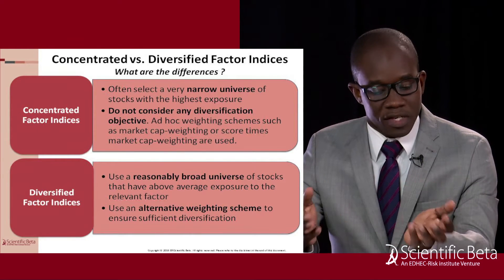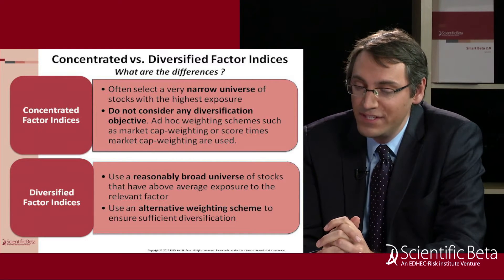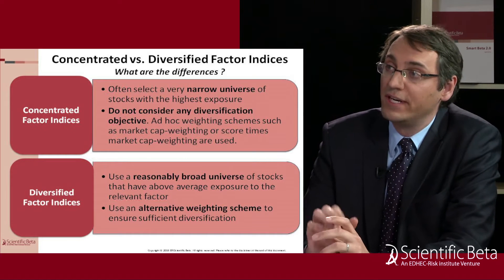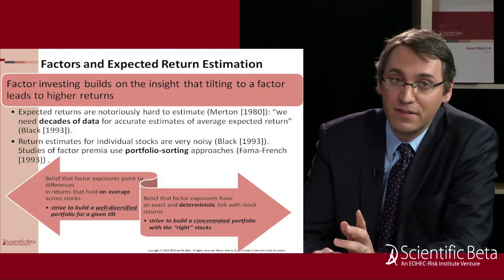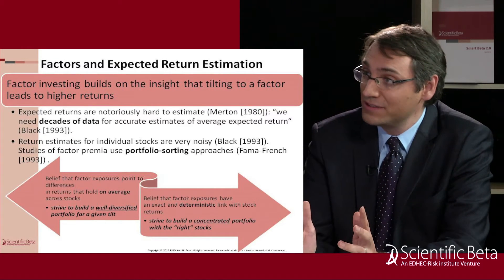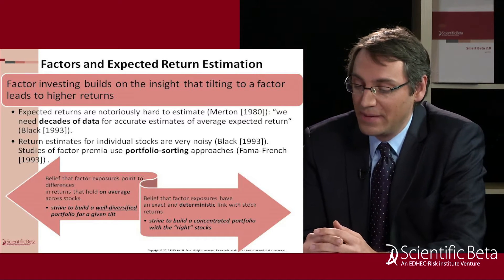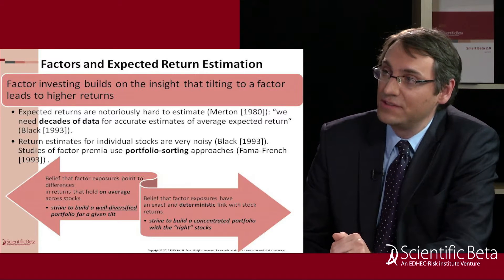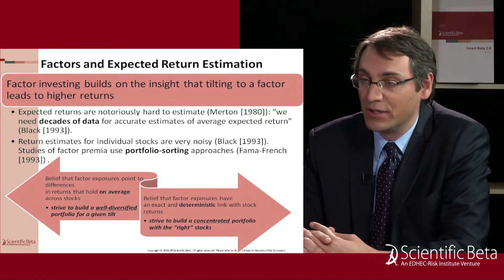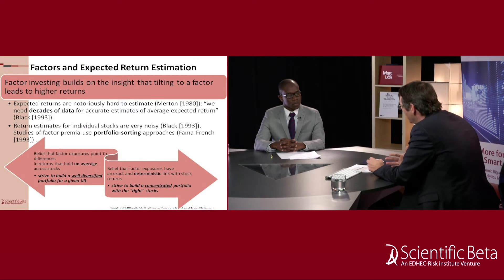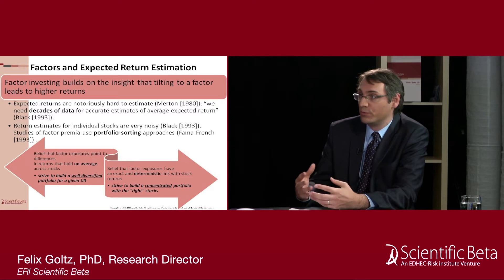Both approaches are widely used, but they're quite different. The reason behind these different approaches is that they are related to quite different investment beliefs. You have to think about what you actually want to achieve with a given factor tilt. Going back to the basics: the idea is that by tilting to these factors — value, momentum, and others — you can get a higher expected return than by holding the broad market. This is the fundamental insight from the academic literature on asset pricing, which has shown that certain factors carry a premium.